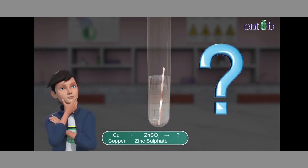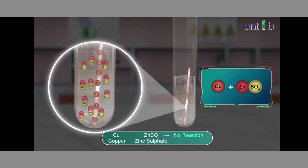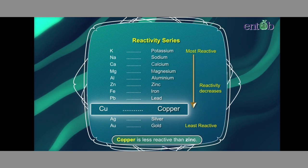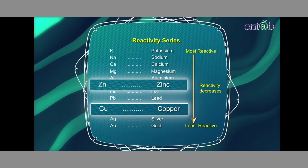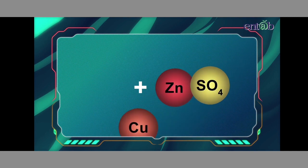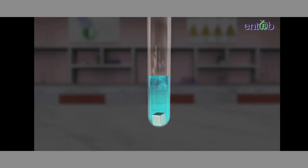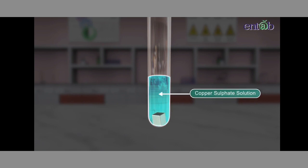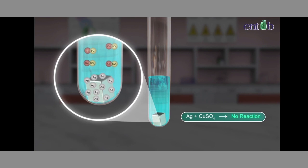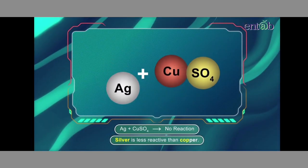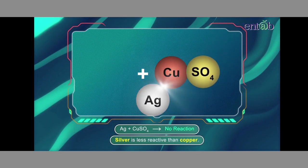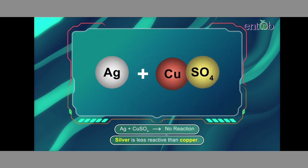However, if we place a strip of copper metal in zinc sulfate solution, there is no change because the reaction does not occur. This is because copper is less reactive than zinc and is unable to displace zinc from its solution. Similarly, if silver metal is put in copper sulfate solution, we do not observe any reaction, as silver is less reactive than copper and cannot replace copper from its solution.